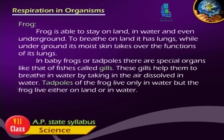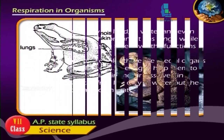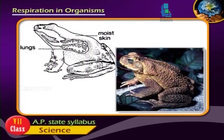Frog: A frog is able to stay on land, in water, and even underground. To breathe on land, it has lungs. While underground, its moist skin takes over the functions of its lungs.